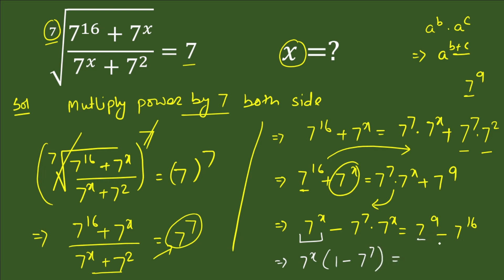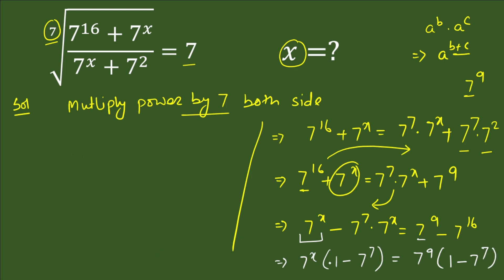On the right hand side, taking 7 power 9 common gives: 7 power 9 times (1 minus 7 power (16 minus 9)), which is 7 power 9 times (1 minus 7 power 7). Since (1 minus 7 power 7) is common on both sides, we cancel it, leaving 7 power x equals 7 power 9.